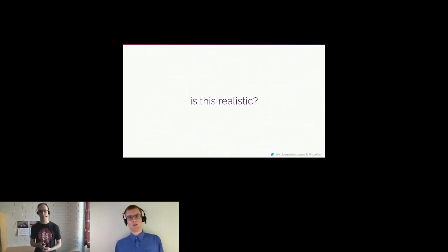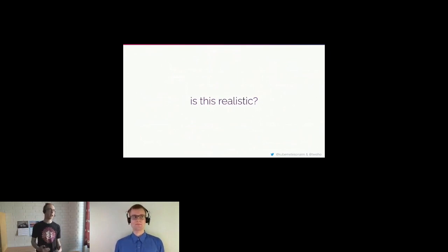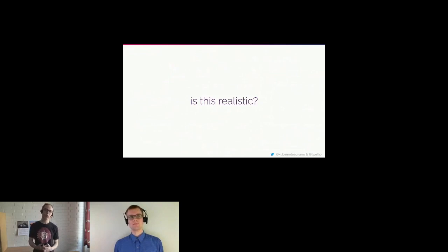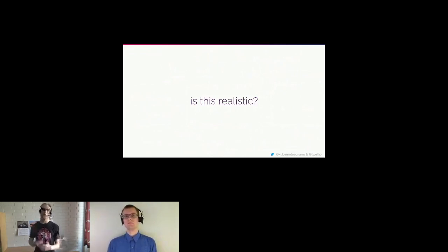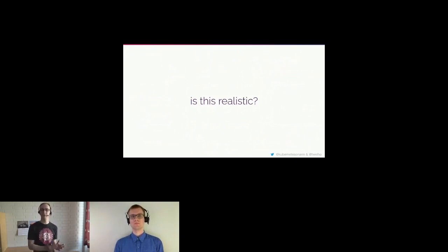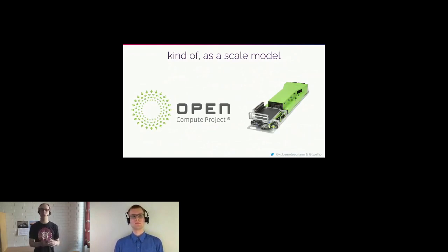To upgrade a node, you only need a one-file change in a pull request. Are these things realistic? Yes — the hyperscalers like Google, Microsoft, Amazon, and Facebook have run into these same problems and made excellent solutions. They've also published parts of their data center blueprints in the Open Compute Project. With Racklet, we've taken inspiration from those and want to make a scale model of those large open compute project servers — something smaller but with the same characteristics.